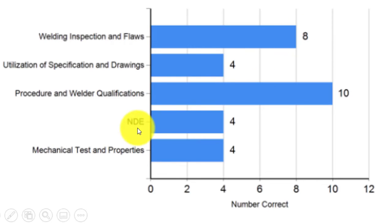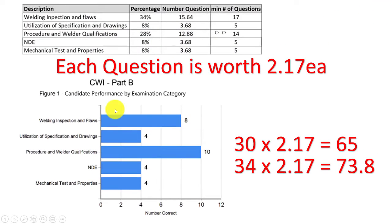Looking at the NDT and mechanical tests and properties, there were only five questions each and he got four out of the five, so that's good. Welding inspection and flaws is what he should concentrate on because he missed nine out of 17 - he missed over 50 percent. If he concentrates on that, he'll be good.